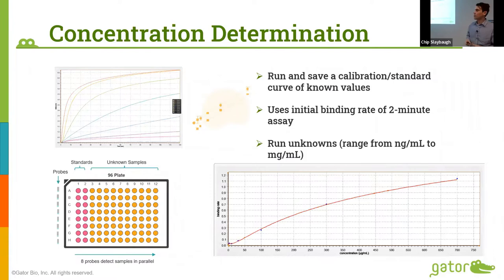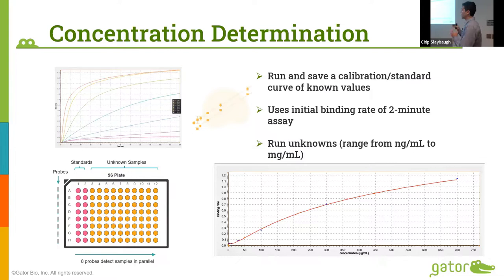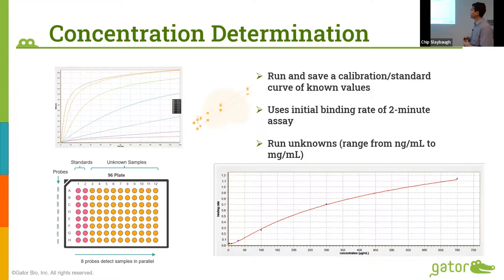To determine concentration on the Gator, it looks at the initial binding rate, which is concentration dependent. You create a standard by preparing known concentrations of your molecule of interest. Gator plots a standard curve of binding rate versus concentration. Unknown samples are measured the same way — their binding rate gives you concentration, plotted on your standard curve.